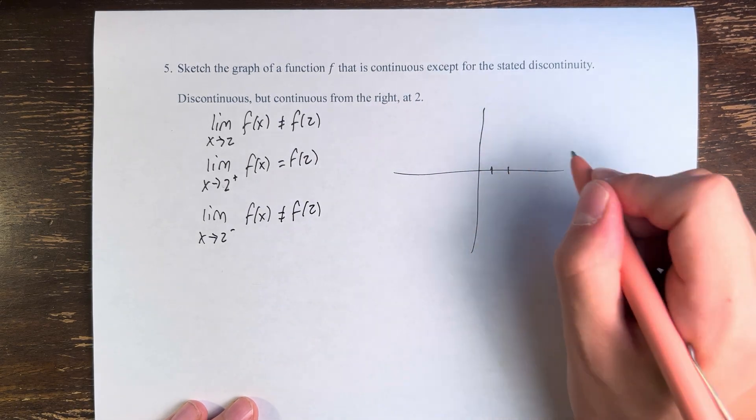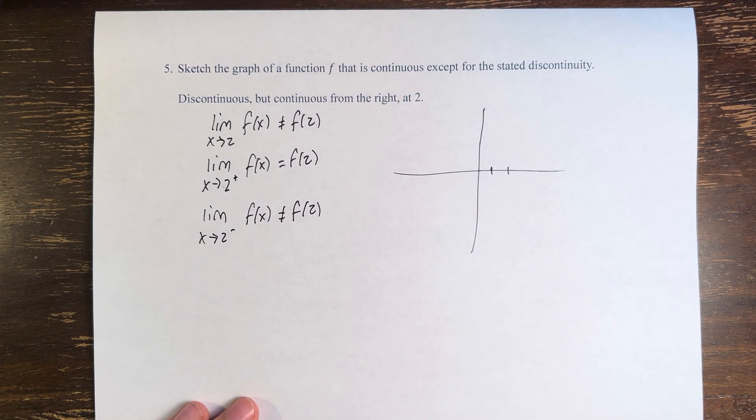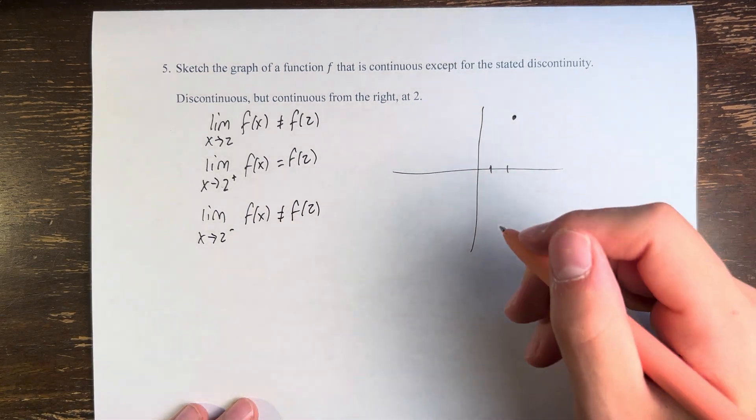So we have our graph here, and x equals 2. Now let's say the function equals this value at x equals 2. It doesn't matter what it is, it just equals that value.